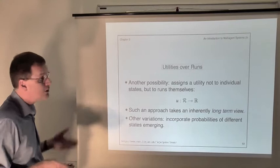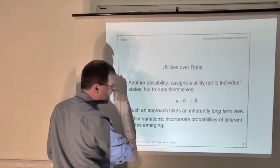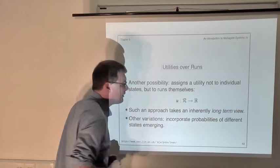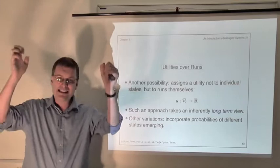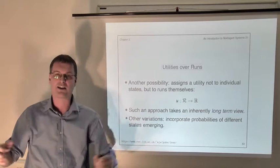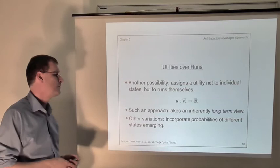So a very natural thing to do is to think about utility functions over runs. The second type of utility function takes as input a run and gives as output a real number. So now for every possible run we're saying how much it would be worth to us if this run occurs. So we're inherently taking a long-term view.